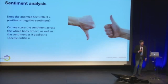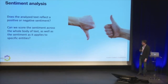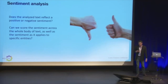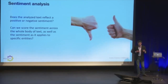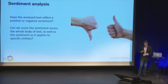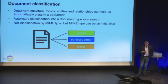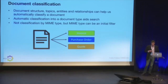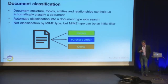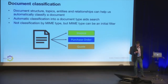Another common use case is sentiment analysis. You see this a lot in support case management — does the text reflect a positive or negative sentiment? Some engines can score that down to the individual entity, so was this person or place mentioned in a positive or negative light? And finally, document classification: the structure, topics, entities, and relationships can help us automatically classify a document. It's much deeper than classifying by MIME type, but in our context we could use MIME type as an initial filter.